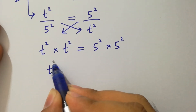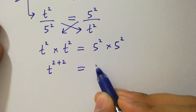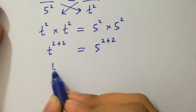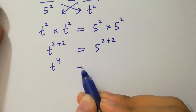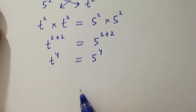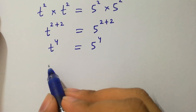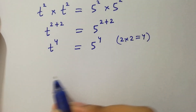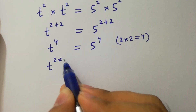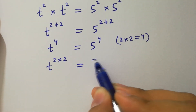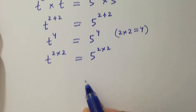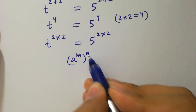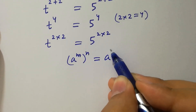It will be t to the power 2 plus 2 equal to 5 to the power 2 plus 2. So 2 plus 2 is 4, giving t to the power 4 equal to 5 to the power 4. Since 4 equals 2 times 2, it will be t to the power 2 times 2 equal to 5 to the power 2 times 2.